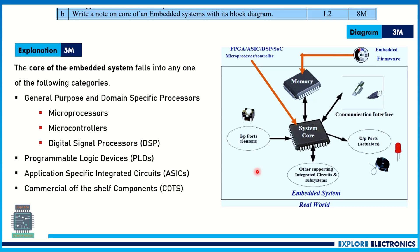Write a note on the core of the embedded system with its block diagram. Core of the embedded system means only the center block. The system core consists of the firmware — the software required to operate the embedded system. This core can be a microprocessor, microcontroller, digital signal processor, programmable logic device, application-specific integrated circuit, or some commercial off-the-shelf components. These are the core of the embedded system.